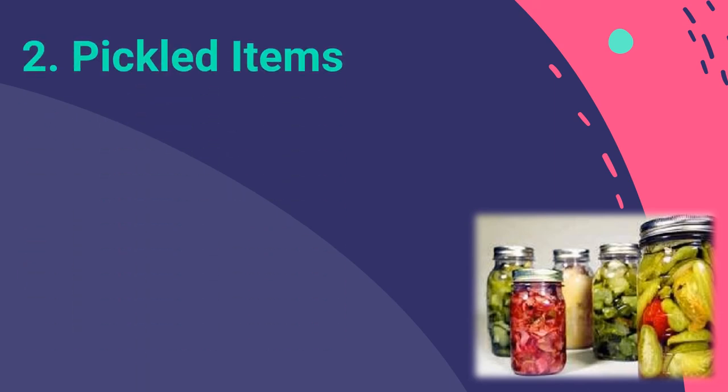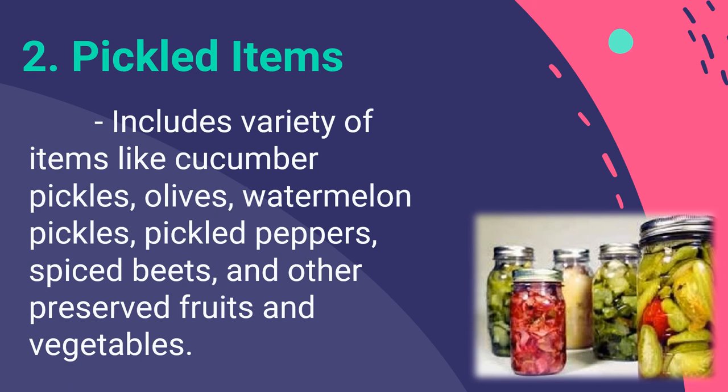The second category of relishes is pickled items, which include a variety of items like cucumber, pickles, olives, pickled peppers, spiced beets, and other preserved fruits and vegetables. Beyond classic cucumbers, other fruits and vegetables that work well for pickling include asparagus, beets, bell peppers, blueberries, cauliflower, carrots, cherries, ginger, green beans, mushrooms, and onions.